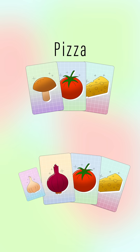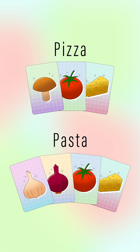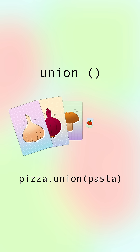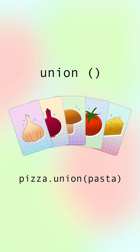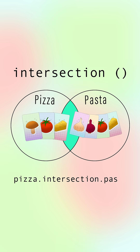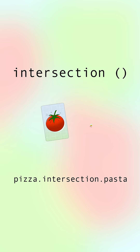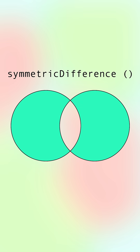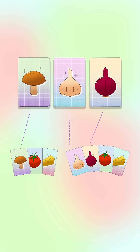So let's say you have a set for pizza toppings and a set for pasta ingredients. Pizza union pasta returns a new set that combines elements from those two. Pizza intersection pasta finds commons between two sets, so returns tomato and cheese. There are also difference and symmetric difference methods for finding unique ones from two sets.